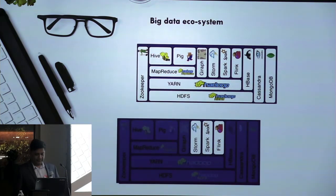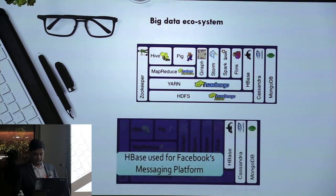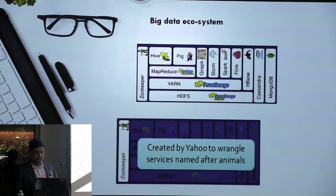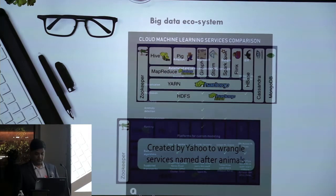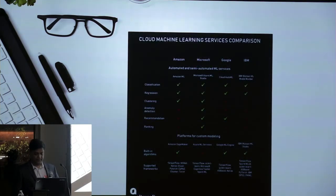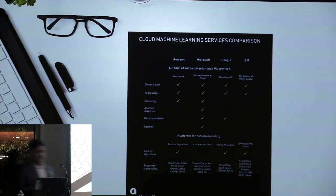Storm, Spark, and Flink are for stream processing. HBase, Cassandra, and MongoDB are NoSQL databases. To manage and synchronize all these things, you can use ZooKeeper. That is the basic big data ecosystem.